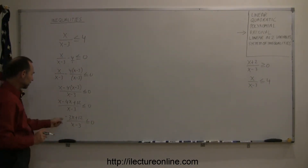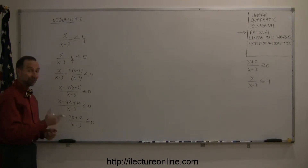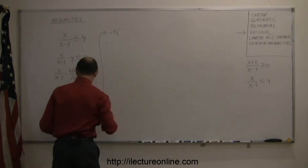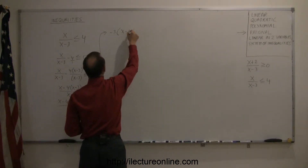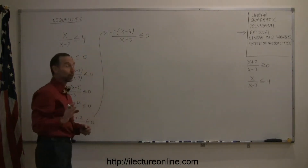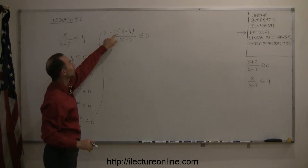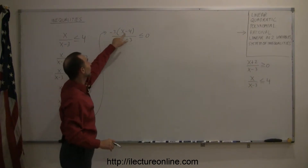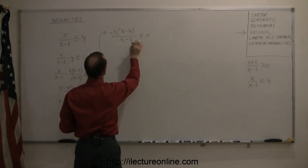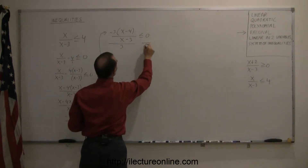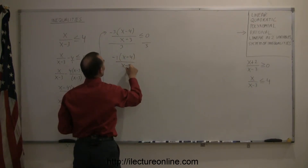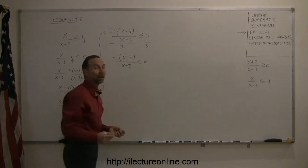You can do one more thing here. Notice that in the numerator you have a common factor of 3, so you can factor out the 3. If you do that, you end up with minus 3 times x minus 4, divided by x minus 3, is less than or equal to zero. As a quick check: minus 3 times x gives minus 3x, and minus 3 times minus 4 gives positive 12 — so no mistakes. Now you can divide both sides by 3, which cancels the 3, giving you minus 1 times x minus 4, divided by x minus 3, is less than or equal to zero, because 0 divided by 3 is still 0.